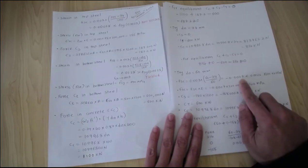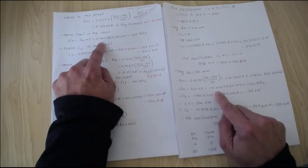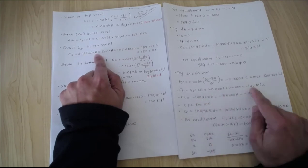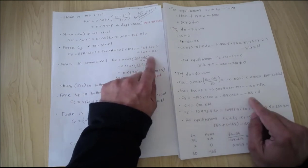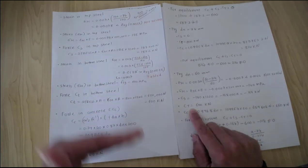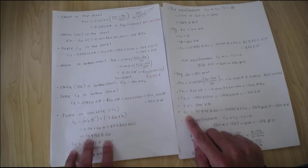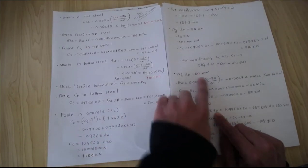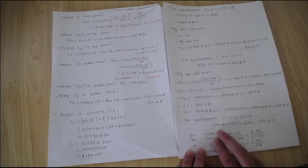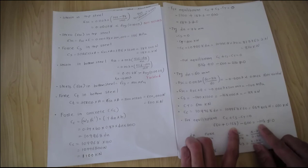If you put dn equal to 60, it's less than 74, so you get a negative strain value — meaning compression. But don't worry, it's still not yielded because it's a very small value close to the neutral axis. Since it's not yielded, we find the stress: strain times Young's modulus gives minus 140. Then force in the top steel is stress times area: minus 140 times 1200 equals minus 168 kilonewtons. The tensile force in the bottom steel is still 600 kilonewtons (yielded). Concrete compression force with dn=60 gives 660 kilonewtons.